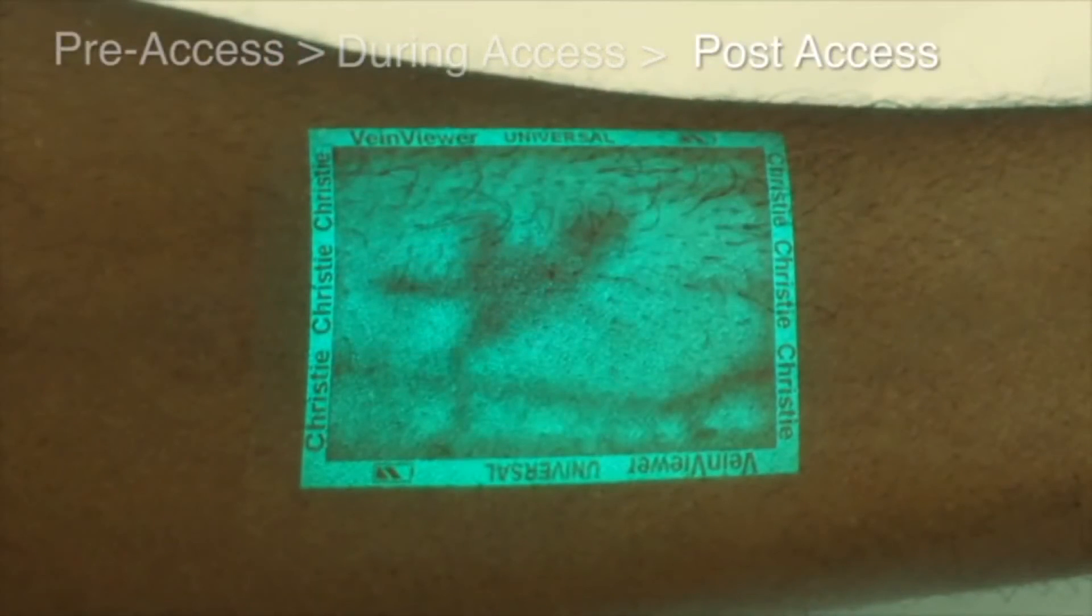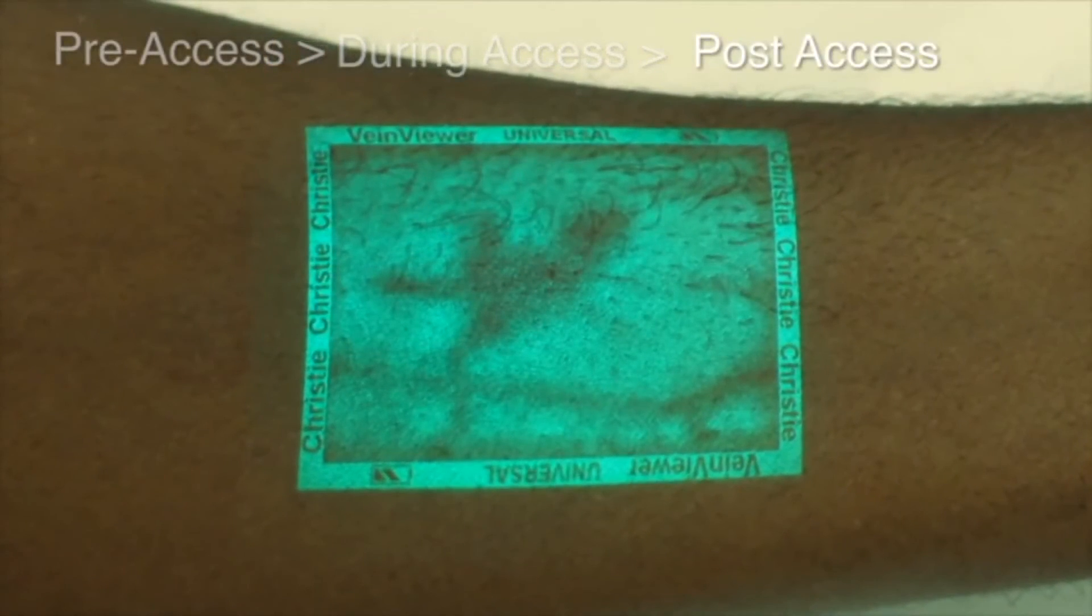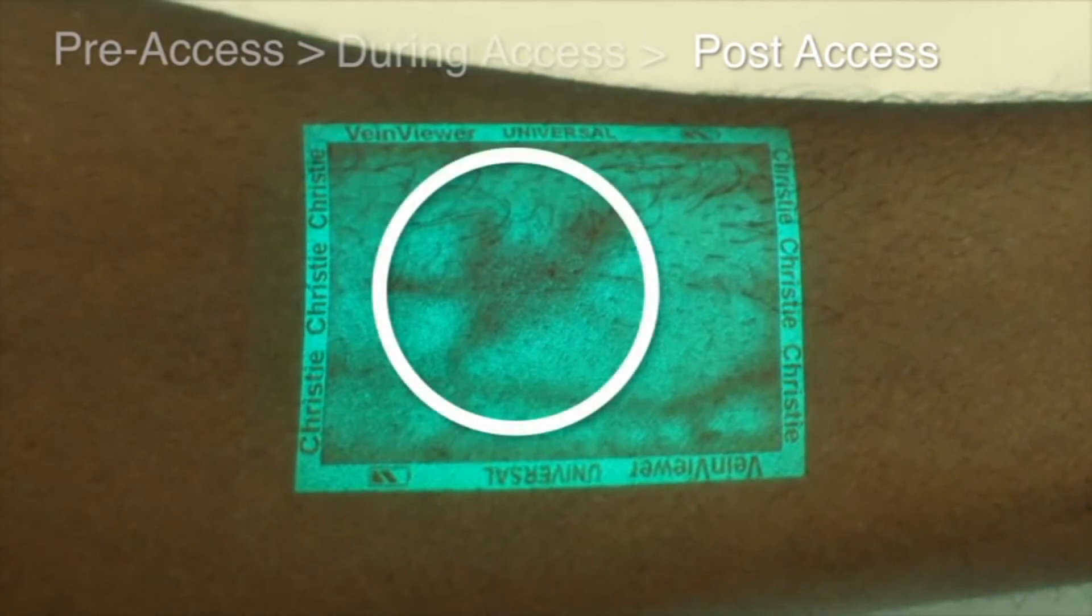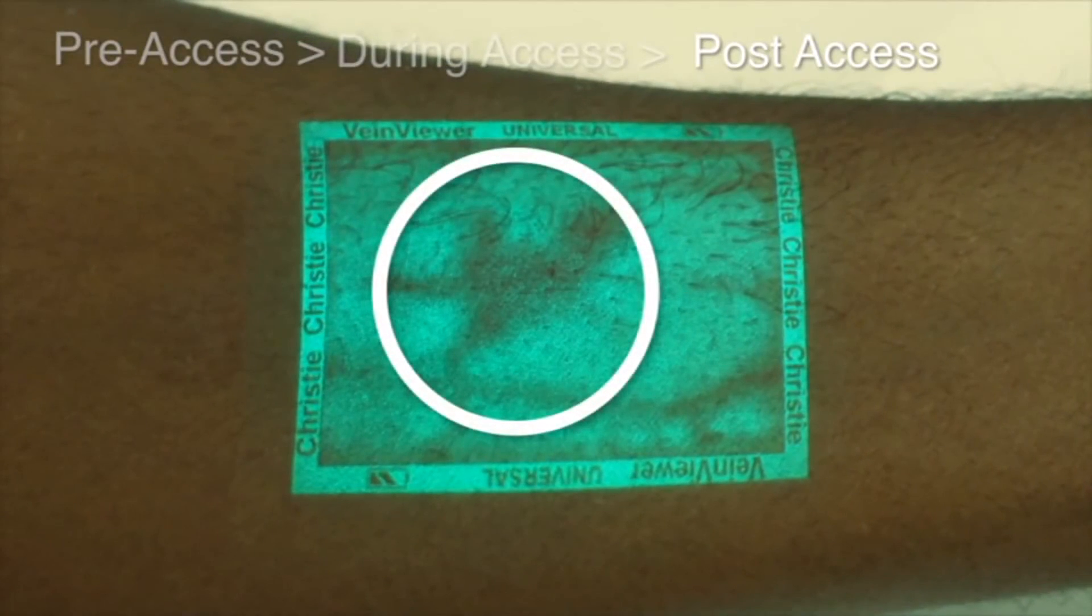VeinViewer is the only vein illumination device that can help you recognize a hematoma forming from a burst or punctured vessel, giving you the information you need to take action and potentially prevent additional complications.